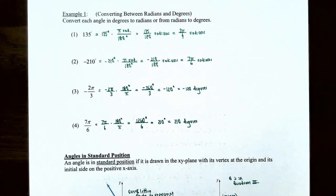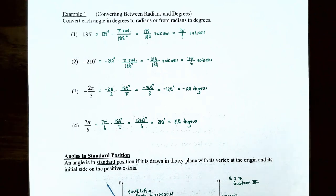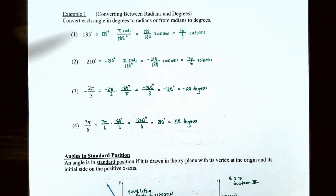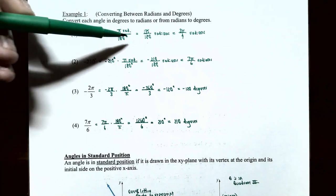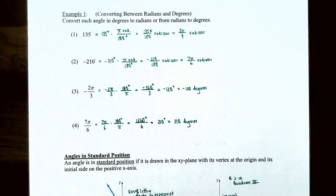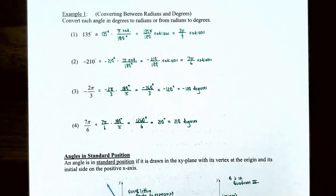Example one: converting between radians and degrees. Number one, 135 degrees. To convert from degrees to radians, multiply by pi divided by 180. So 135 degrees times pi over 180 gives 135 pi divided by 180, and the degree units cancel. Simplifying 135 over 180 gives 3 pi divided by 4 radians.